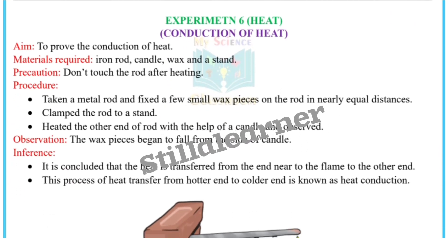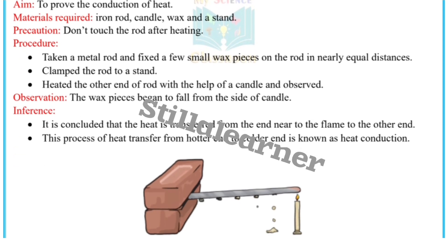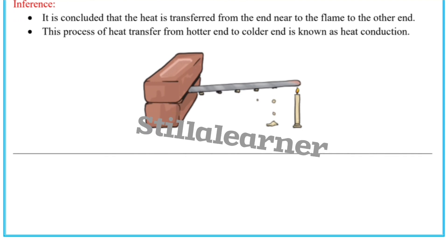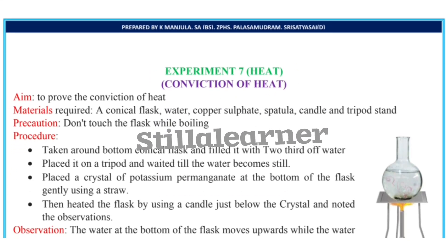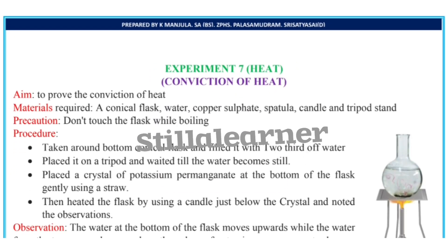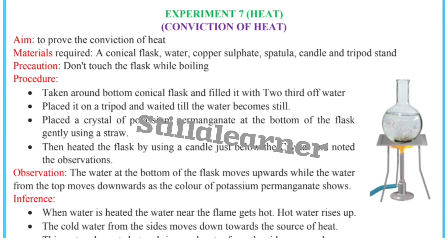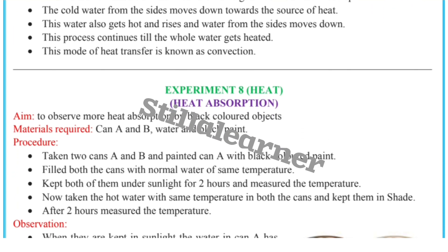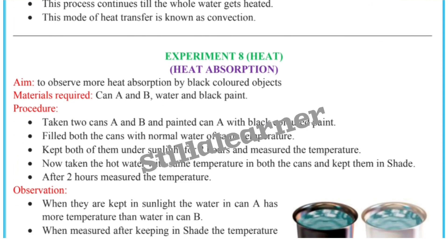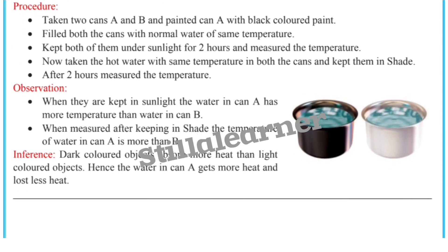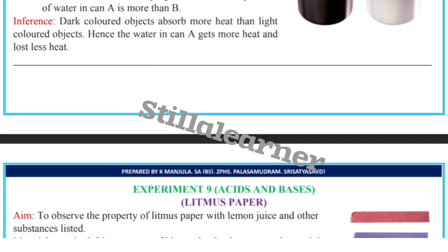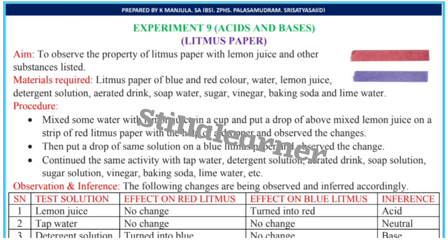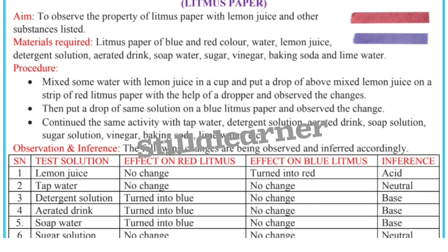Pause the video and write down neatly, and please don't make any mistakes while writing. Experiment number seven is heat: convection of heat. Experiment number eight is again heat: heat absorption. Experiment number nine is acids and bases: litmus paper.